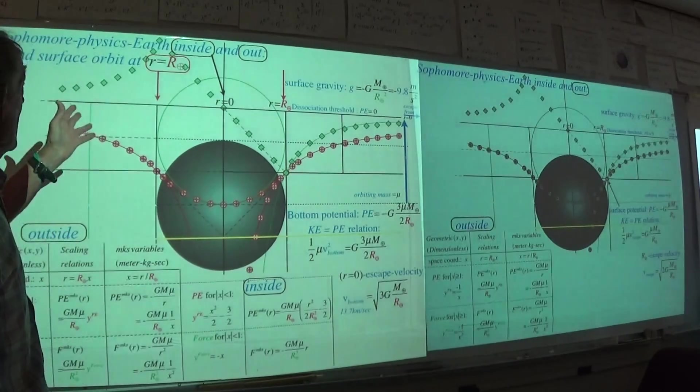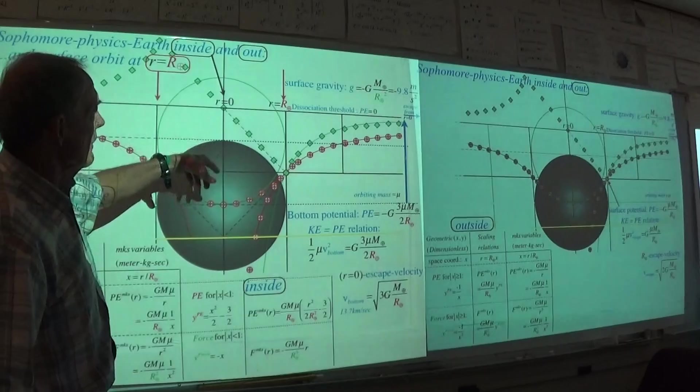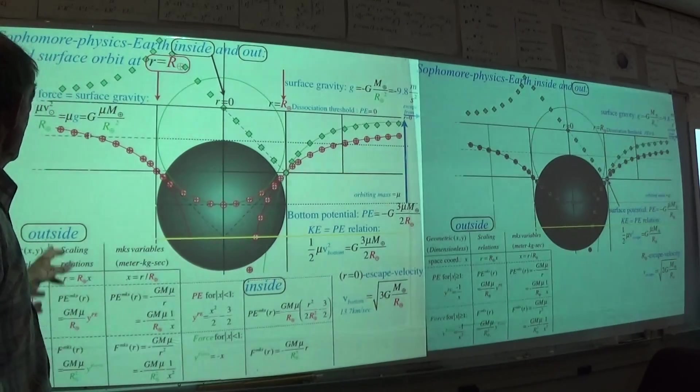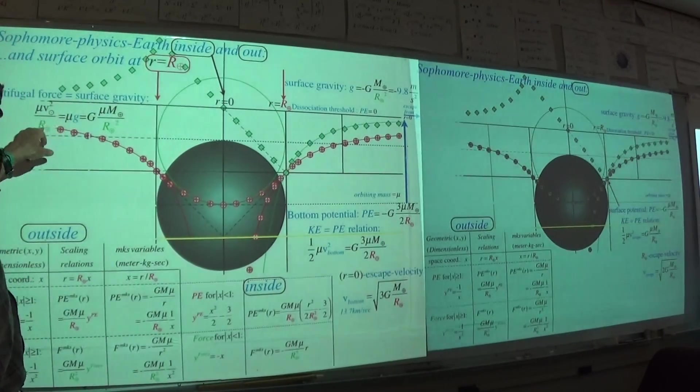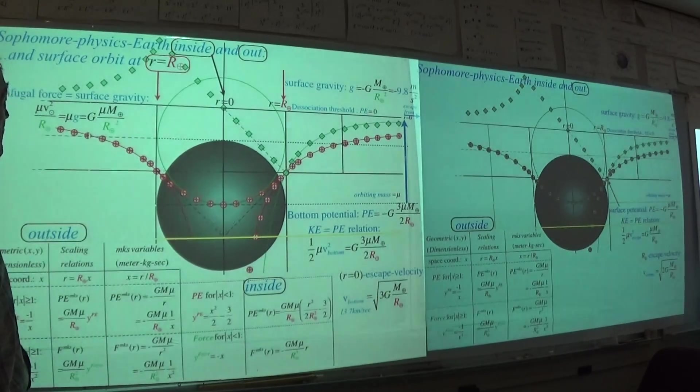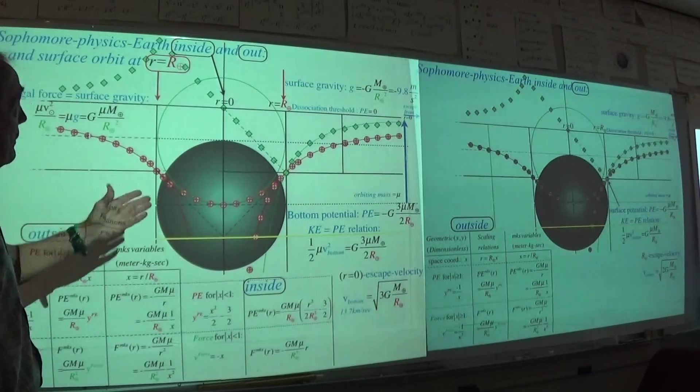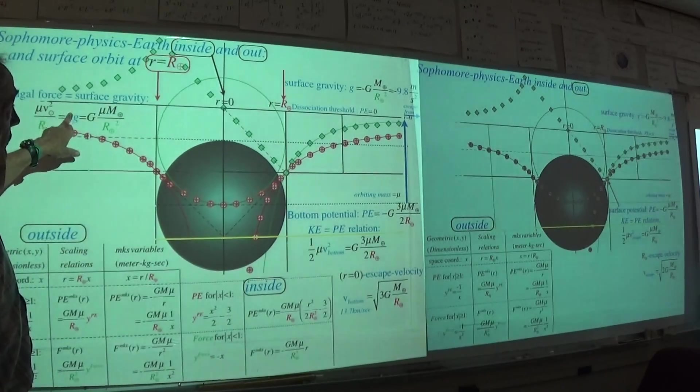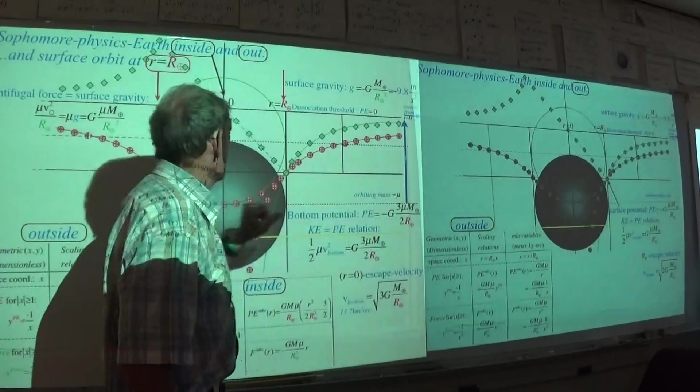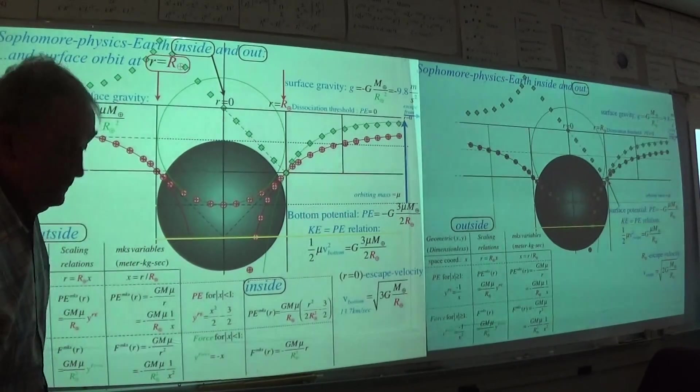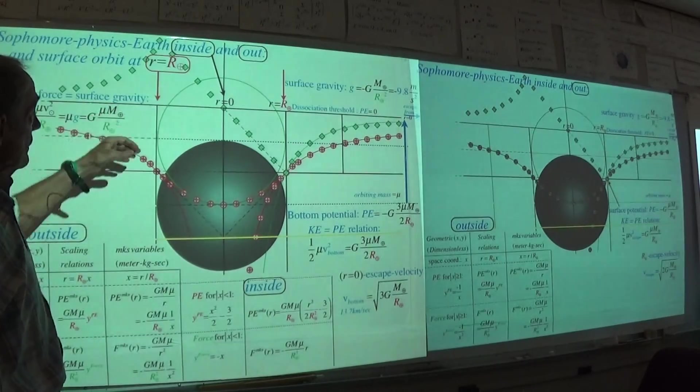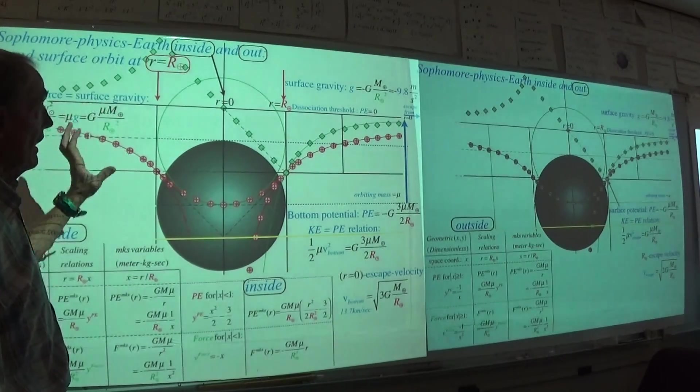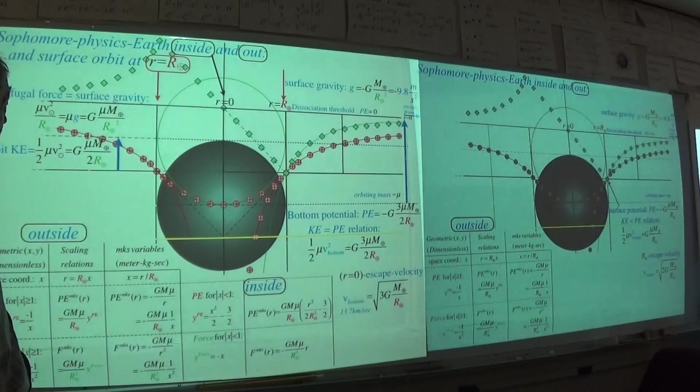Well, inside and out, the surface orbit right there, that particular energy is obtained fairly easily just by using the centrifugal mass, mass times velocity squared over the orbit radius, which is the radius of the Earth. That should be that mass. Mu is the mass of the particle we're actually imagining orbiting mass mu.